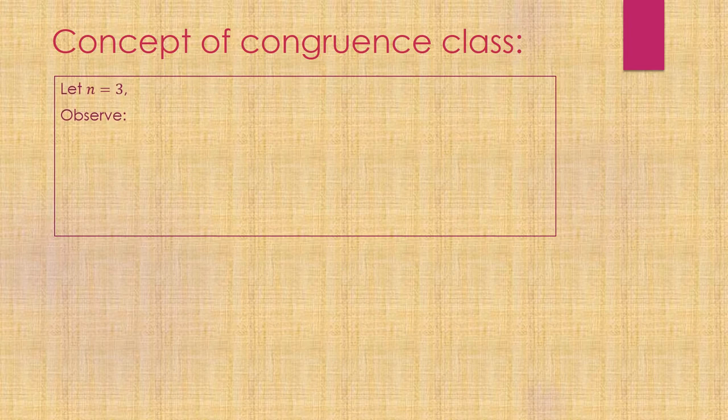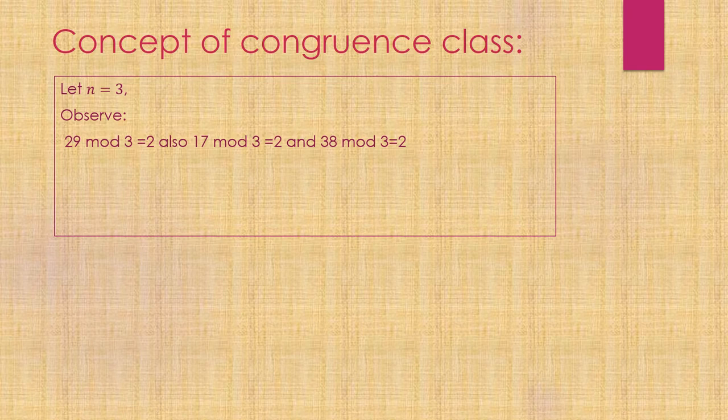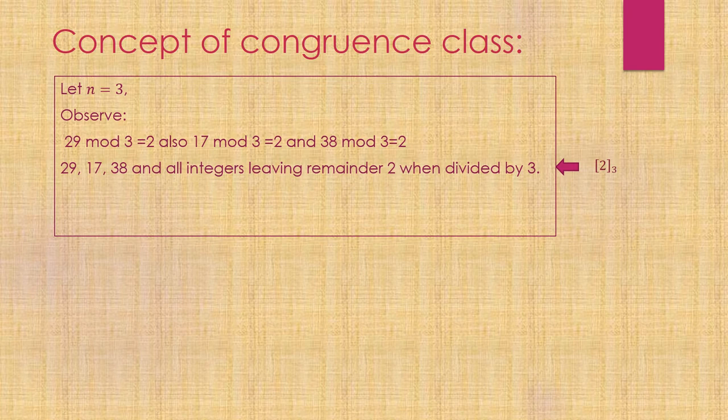Now I want to introduce the concept of congruency class. Let's take n equals 3. Observe that 29 modulo 3 gives remainder 2, 17 also gives remainder 2, and 8 also gives remainder 2. All such integers which leave remainder 2 when divided by 3 are referred by the notation [2] with suffix 3, where the suffix denotes modulo 3.